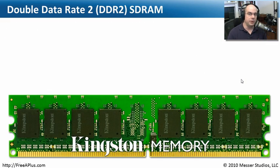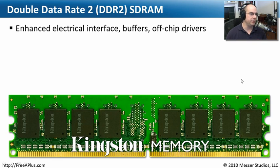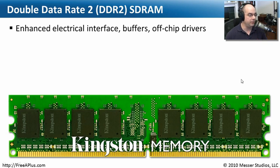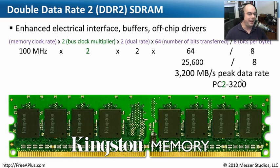DDR worked great, but as processor speeds and bus speeds increased, we needed even faster capabilities, so DDR2 came out. DDR2 has a number of additional capabilities: a new electrical interface, more buffers, and additional drivers off the chip — all of which allow it to go much faster.